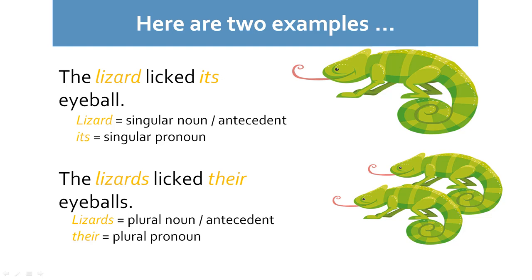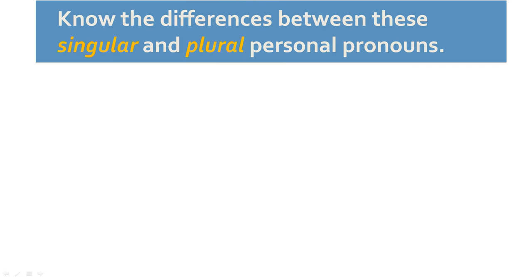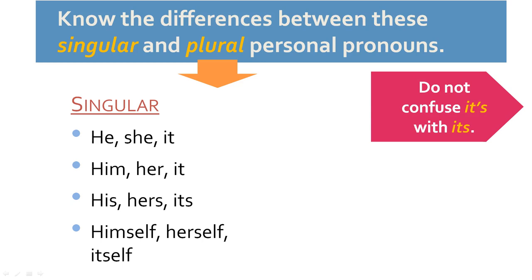To get your mind around rule number one, you need to know the differences between singular and plural personal pronouns. Our singular ones are: he, she, it; him, her, its; his, hers, its; himself, herself, itself. Remember, there's not a single pronoun in the English language that has an apostrophe in it, so don't confuse 'its' with 'it's.' Our plural pronouns are: they, them, theirs, their, and themselves.